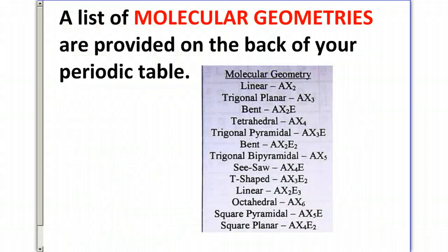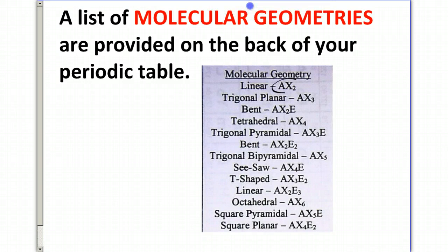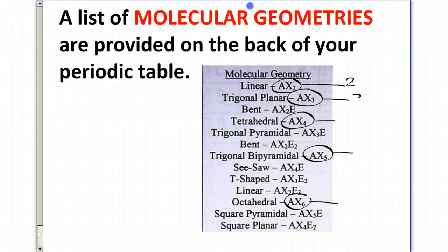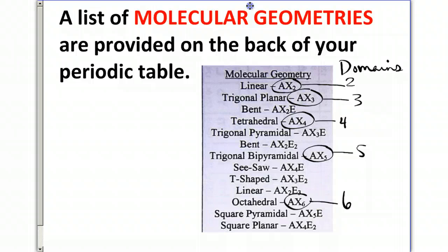A list of the molecular geometries is provided for you on the back of your periodic table, so you don't have to memorize them for your test. Just remember how to determine your electron domain geometries: if we have no E's, the shapes with no lone pairs represent two domains, three domains, four, five, and six. That's your shortcut — use the electron domain geometry, then use your A's, X's, and E's to figure out the molecular geometry.